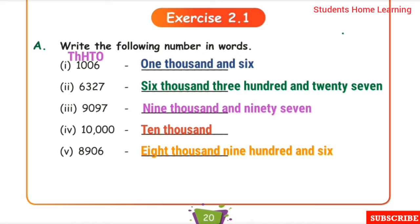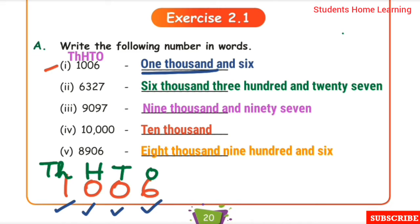Exercise 2.1: Write the following numbers in words. First one: 1006. Place value: 6 ones place, 0 tens place, 0 hundreds place, 1 thousands place. First thousands place: one thousand. Hundreds place is 0, tens place is 0, ones place is 6. The answer is one thousand and six.